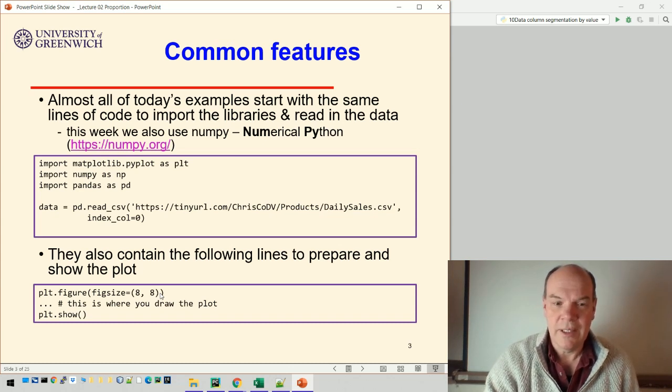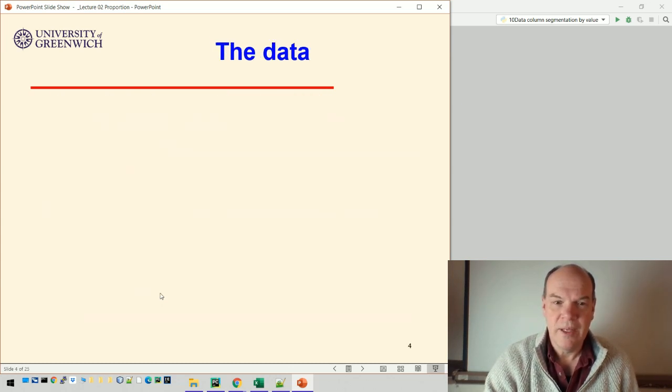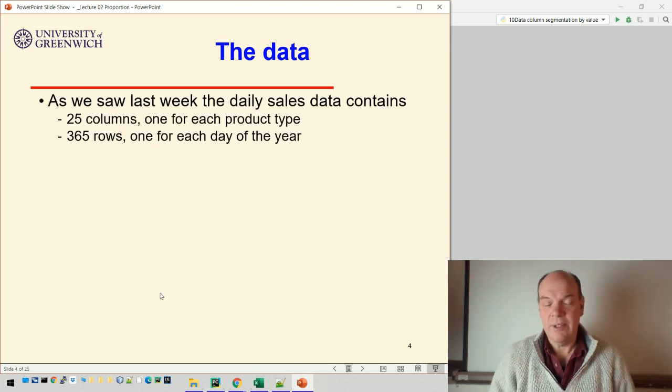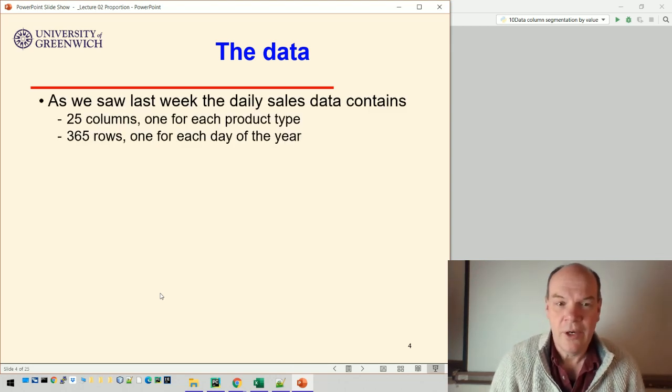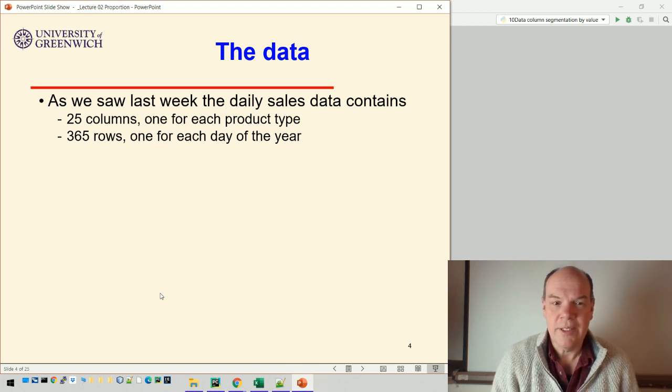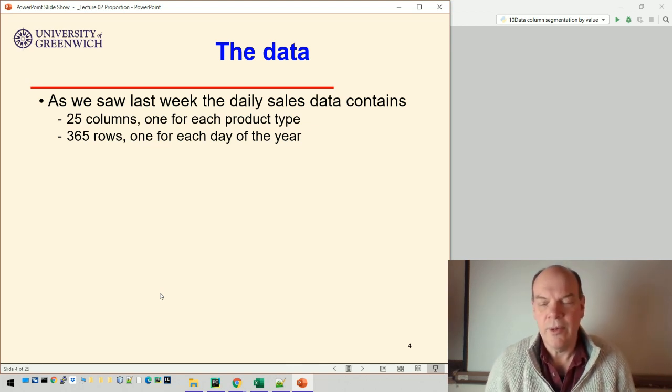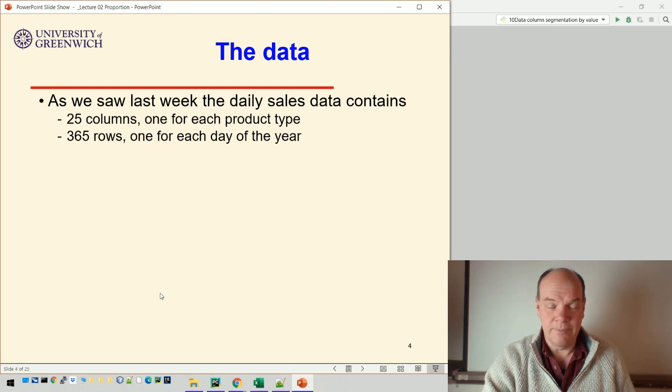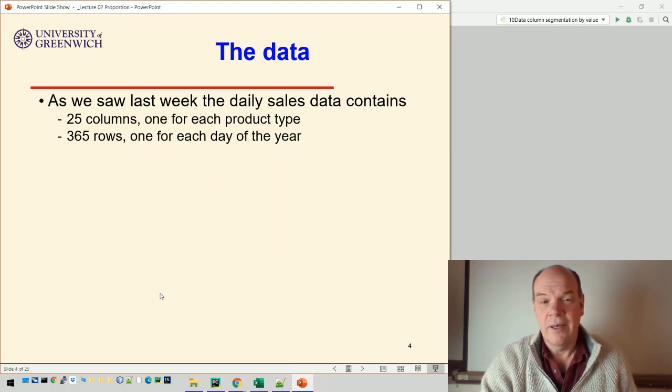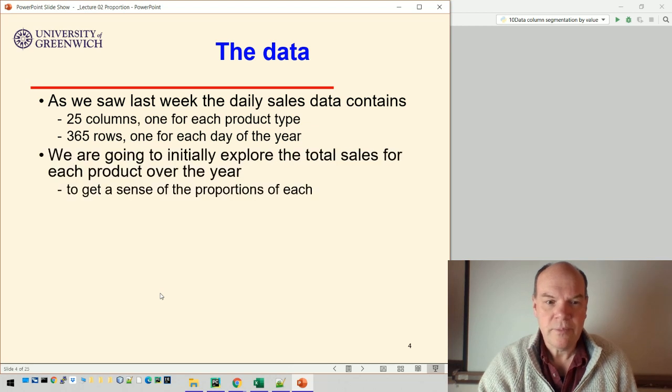The data we've seen, just as we saw last week, has 25 columns - there are 25 different products - and 365 rows, one for each day of the year. If you remember, each day tells you how many products of that type were sold that day, so each cell in the spreadsheet.